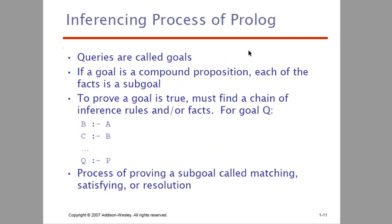Next, we have the inferencing process of Prolog. Queries are also called goals. If you have a goal, it will be a compound proposition broken into sub-goals. Here you can see B is inferencing A, C is inferencing B, and so on — Q is inferencing P. We will satisfy one inference rule at a time; it will be a chain of rules. If all sub-processes are individually true, the conclusion will be true. The process of proving a sub-goal is called matching, satisfying, or resolution. That is the inferencing process of Prolog.